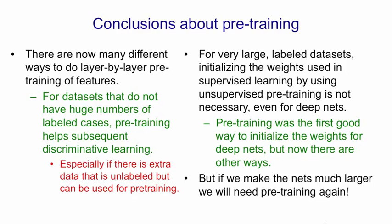An argument I often have with people from Google is they say they've got lots and lots of labelled data, so they don't need regularisation methods — their nets won't overfit anyway because they've got so much data. The counter-argument is that's only because you're using nets that are much too small. You should use much, much bigger nets on much, much more powerful computers, and then you'll start overfitting again and you'll need these regularisation methods like dropout and pre-training. If you ask which regime the brain is in, the brain is clearly in the regime where it's got huge numbers of parameters compared with the amount of data it's got, and so for the brain, regularisation methods are very important.